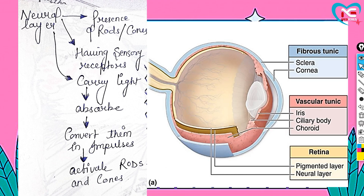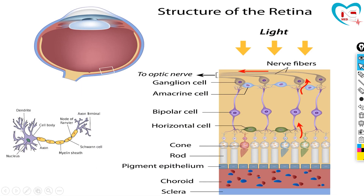Now you might wonder how the neural layer sends messages to the brain. It doesn't physically move to the brain — there are messengers called nerve cells, which we also call neurons. Here you can see cone-shaped cells — these are cone cells — and rod-shaped cells — these are rod cells. These neurons are situated with their head and dendrites near the rod and cone cells, and these neurons carry the message to the brain and spinal cord.